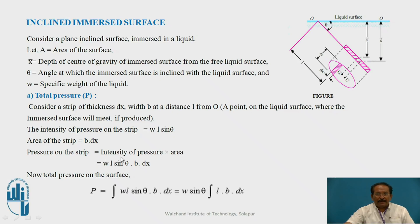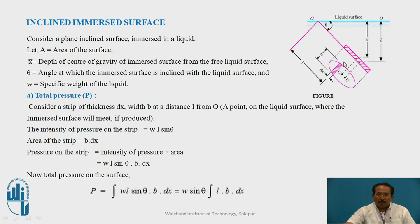Therefore, the pressure on the strip is intensity of pressure multiplied by area — that is w·l·sin θ multiplied by b·dx — giving the pressure on the strip. The total pressure on the surface is the integration of all these strips: P equals integration of w·l·sin θ · b·dx.